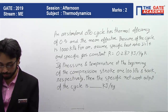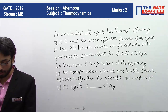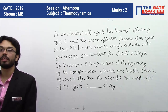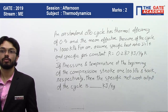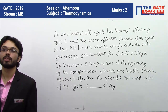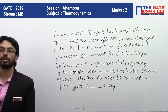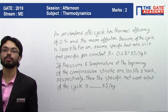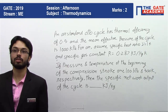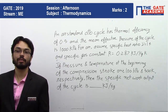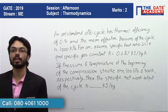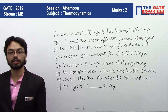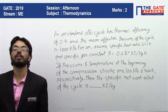The question states: a standard Otto cycle has a thermal efficiency of 0.5 and a mean effective pressure of 1000 kilo Pascal. For air, assume specific heat ratio gamma = 1.4 and specific gas constant R = 0.287 kilo joule per kg Kelvin. Pressure and temperature at the beginning of the compression stroke are 100 kilo Pascal and 300 K respectively.